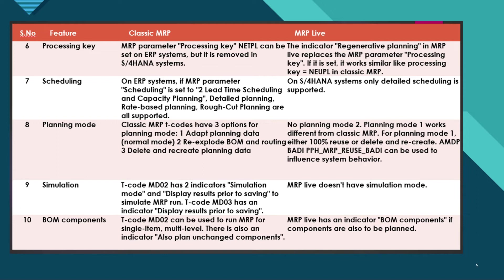Regarding BOM components: Tcode MD02 can be used to run MRP for single item multi-level, with an indicator 'also plan unchanged components'. In MRP Live, there is an indicator 'BOM components' to control if components are also to be planned.